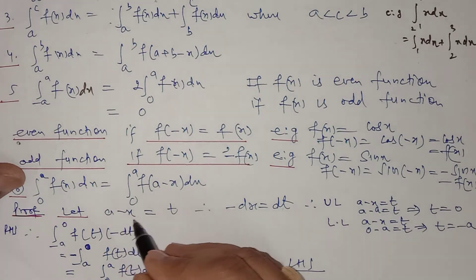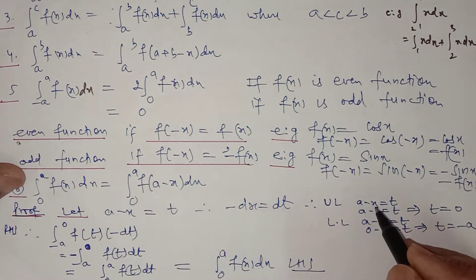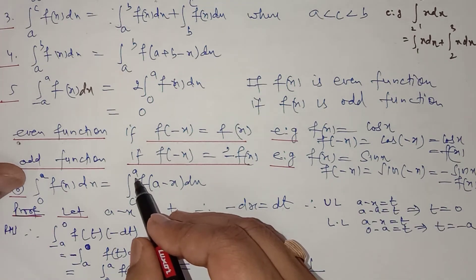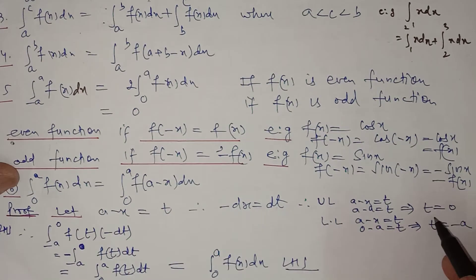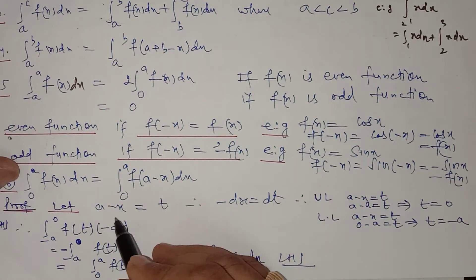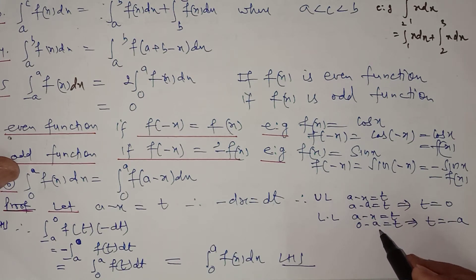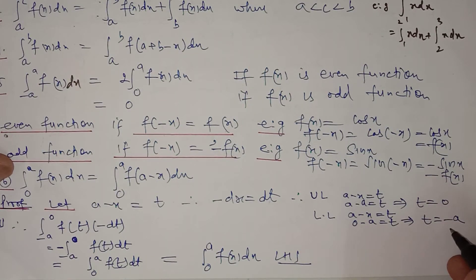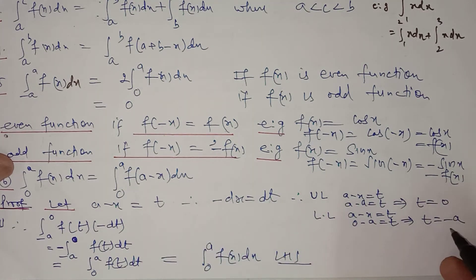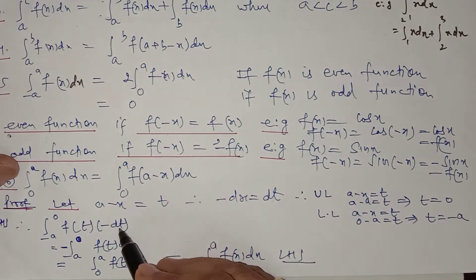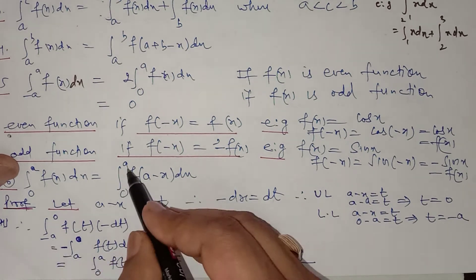When the upper limit is x = a, substituting gives t = a − a = 0, so the upper limit in terms of t is 0. When the lower limit is x = 0, substituting gives t = a − 0 = a, so the lower limit in terms of t is a. Therefore, replacing, we get the integral from a to 0 of f(t) times (−dt).